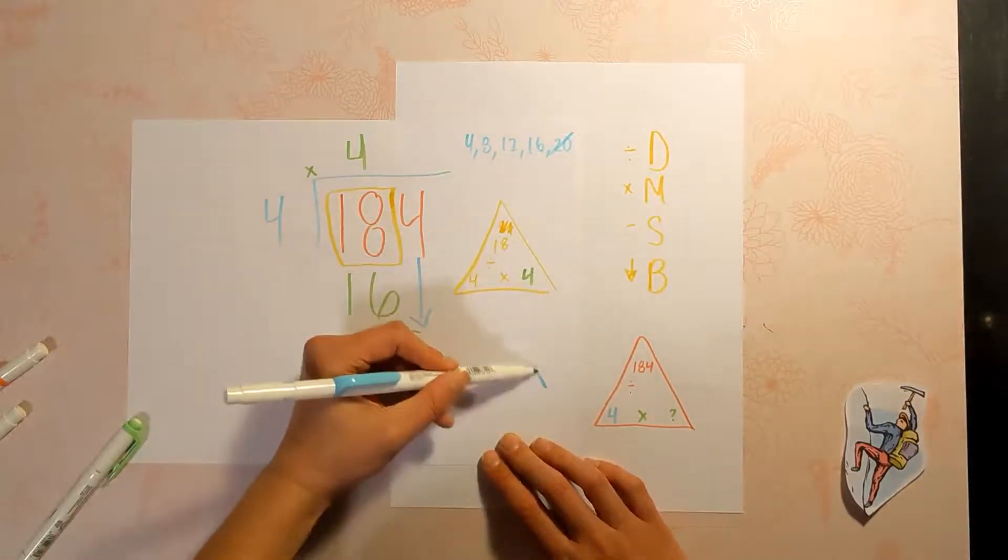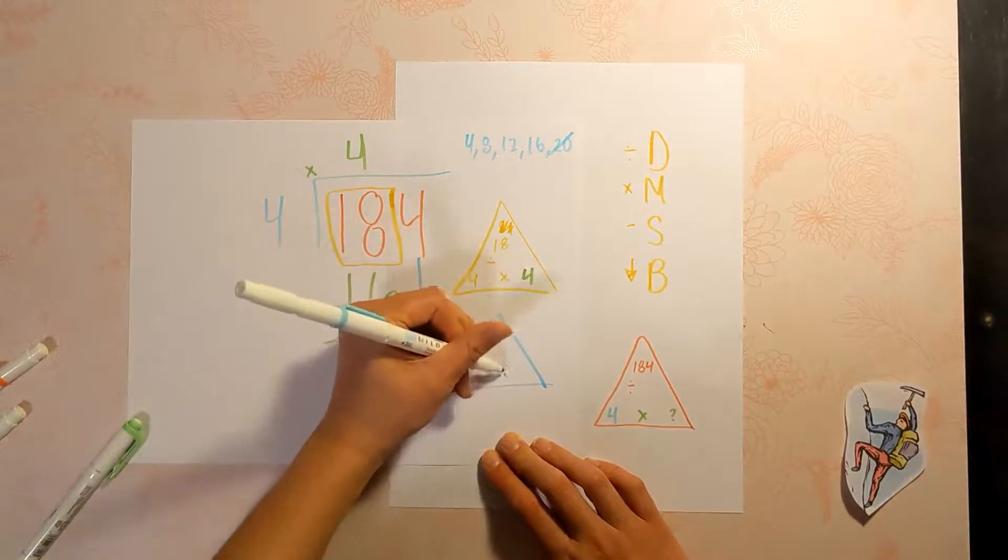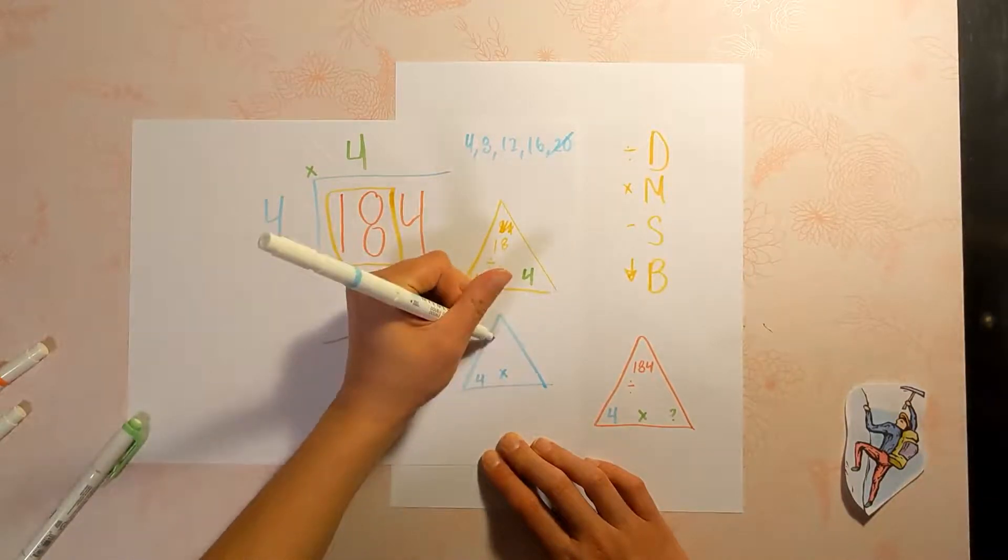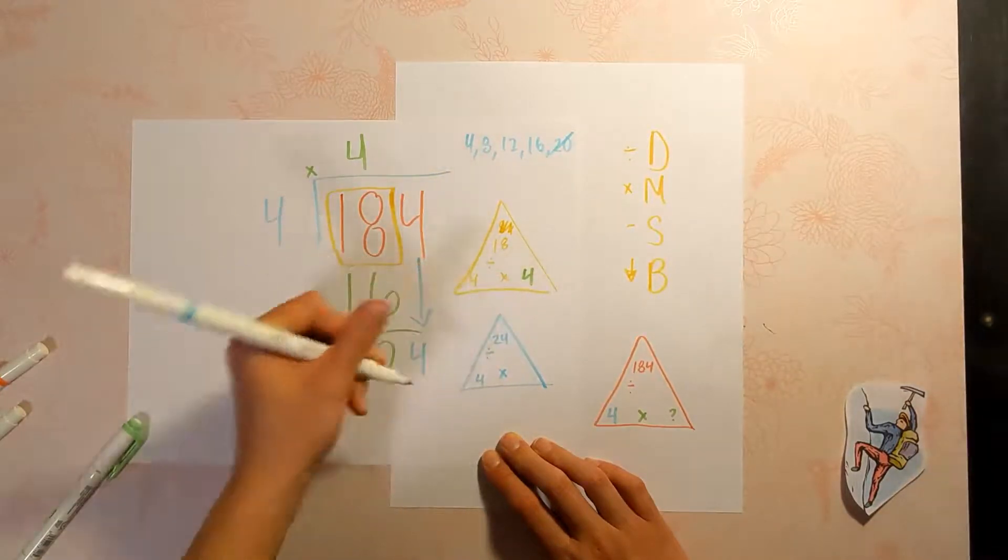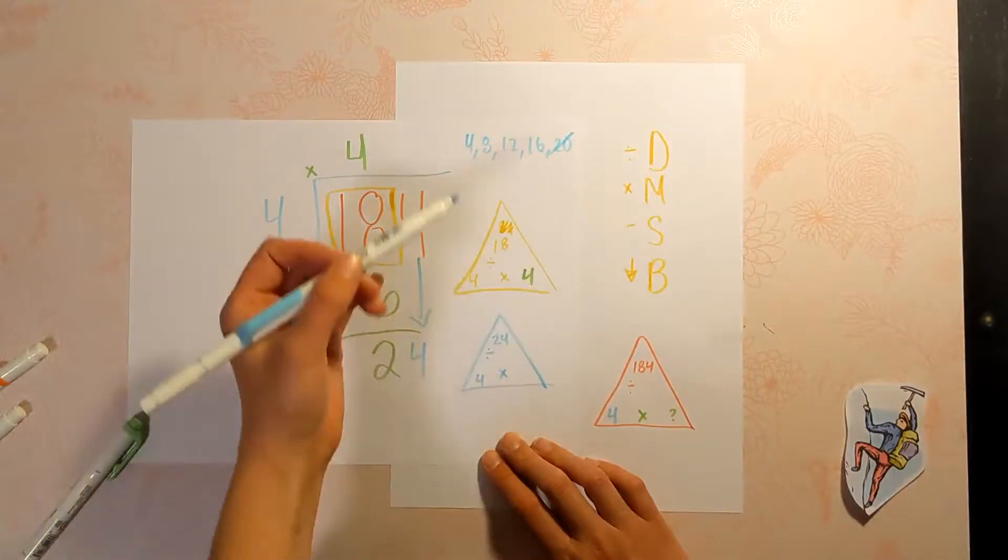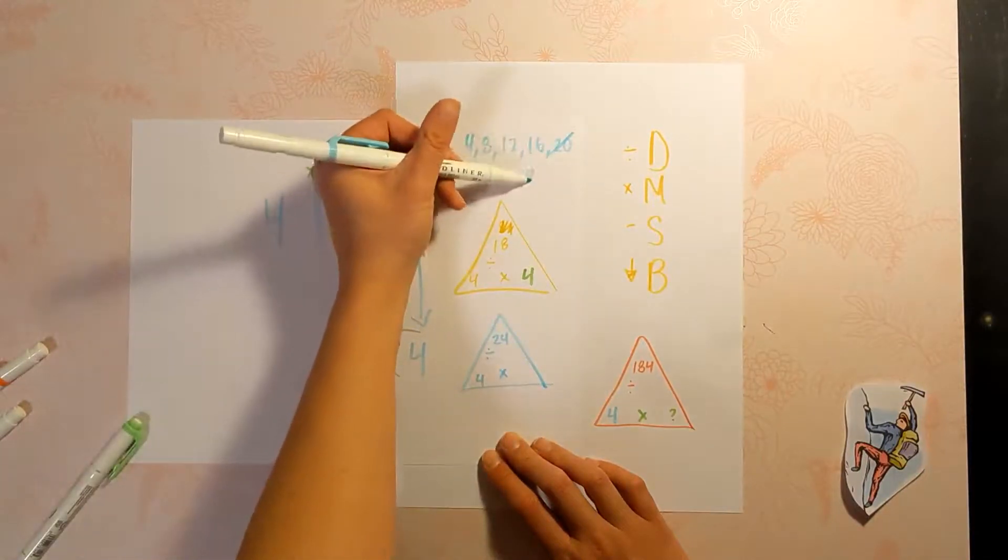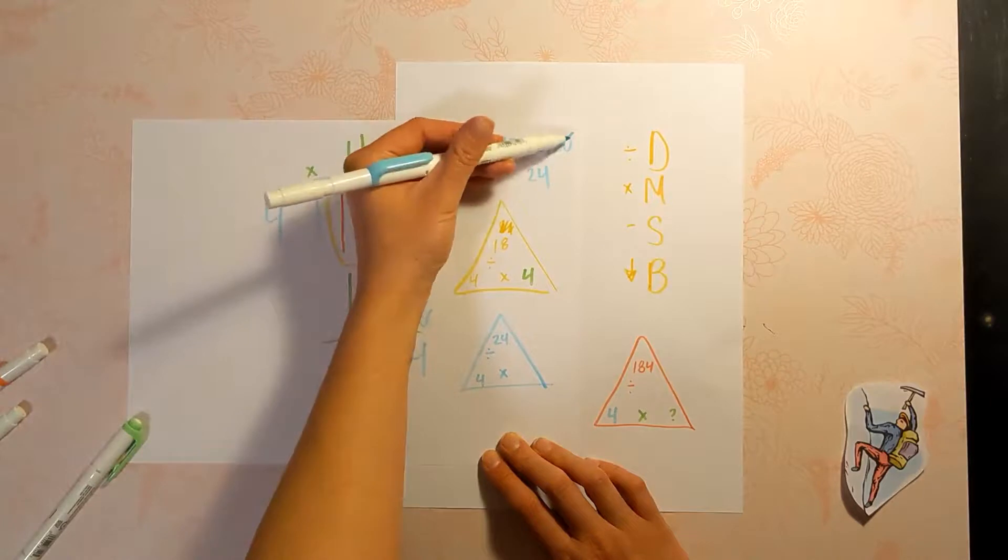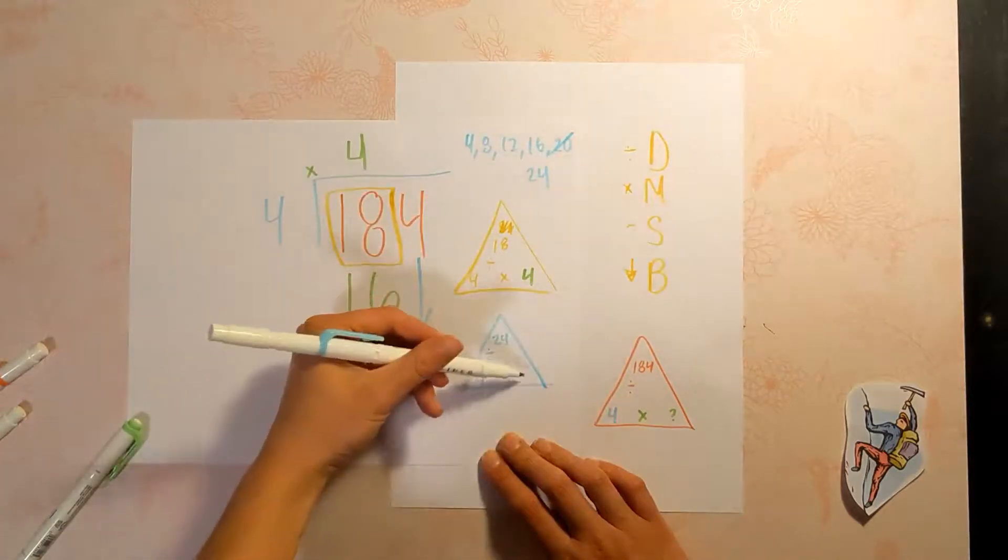So what is 24 divided by four? If you know your fact families, then you know four times something equals 24. If you don't, just skip count until you get there: four, eight, twelve, sixteen, twenty, 24—one, two, three, four, five, six. 24 divided by four is six.